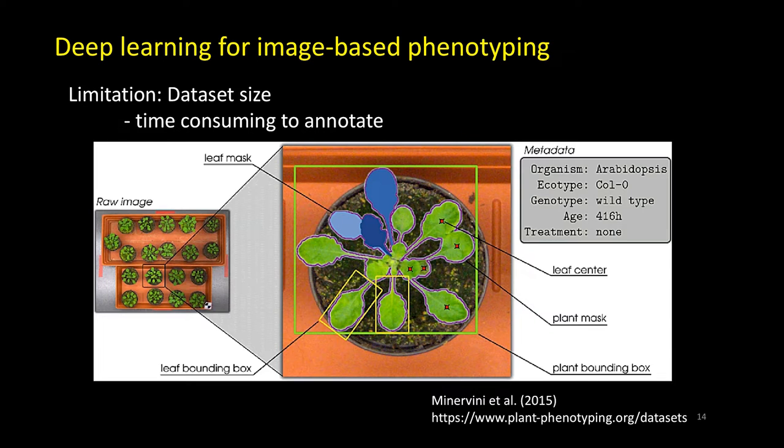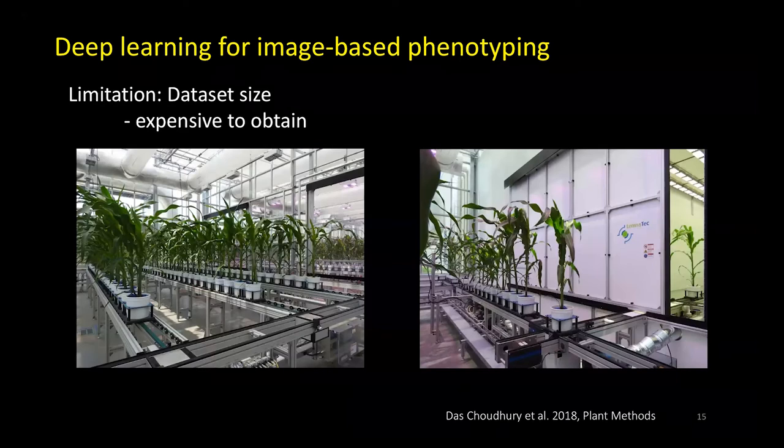Moreover, existing image datasets used for plant phenotyping are relatively small. For example, a publicly available dataset for leaf counting in Arabidopsis rosettes has 160 annotated images. The datasets can also be expensive to obtain, requiring large facilities to grow and photograph the plants.